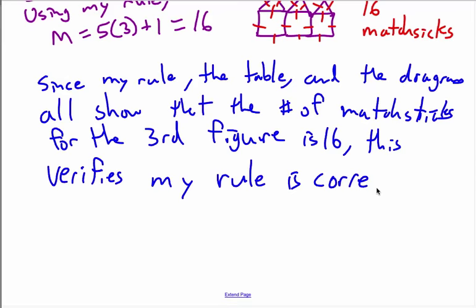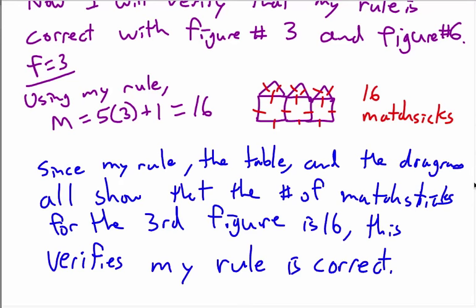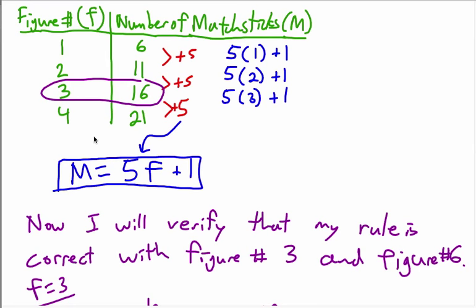We did that for figure number three, but it's not good enough to check one example, because sometimes you can get the wrong rule and it works for one example. So we're going to extend the table and go up to the sixth figure. Going to the fifth figure number — adding five — we get twenty-six, and going to the sixth figure, we should get thirty-one.